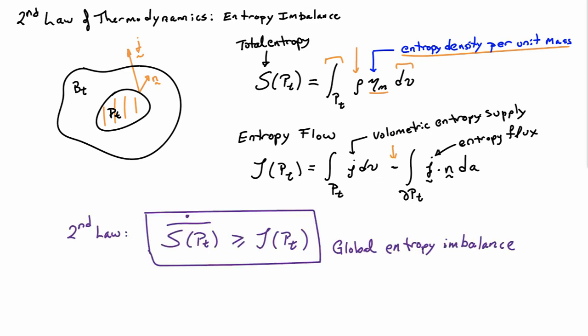The second law itself says that the time rate of change of the total entropy is always greater or equal to the entropy flow. This is the global entropy imbalance. The entropy can never change at a rate that is less than the flow of entropy into the body—it's always increasing faster than what you're putting into it. This is the global form of the second law of thermodynamics. I'd like to look also at the local form.